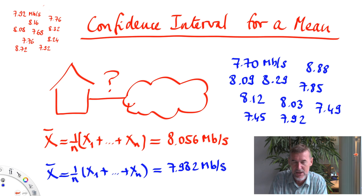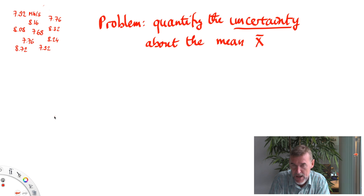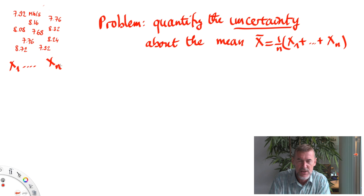So the problem is to quantify the uncertainty we have about the mean, x-bar, that we have computed from our n data points x1 to xn. This is apparently a very difficult problem because we have only those 10 points and quantifying the uncertainty in theory would require being able to replay the experiment as many times as we want. But we won't be able to do that.